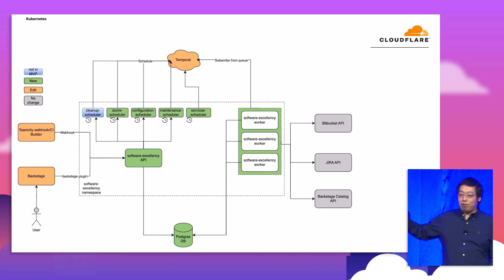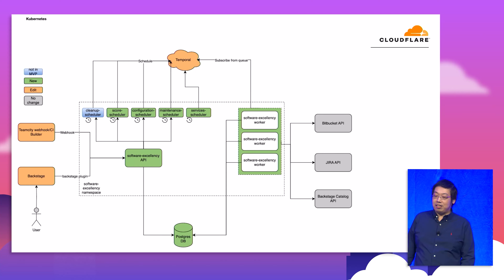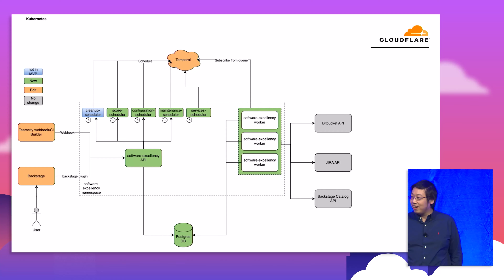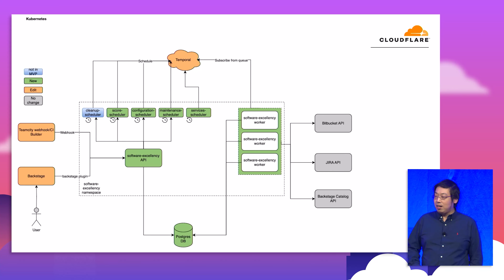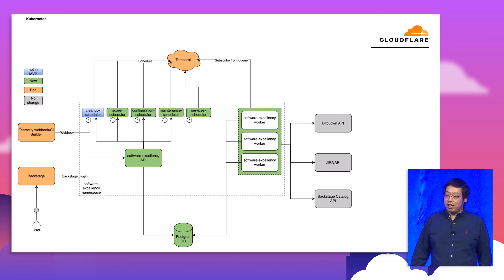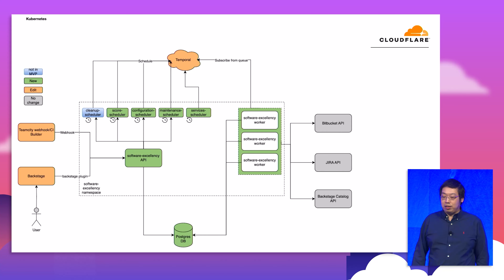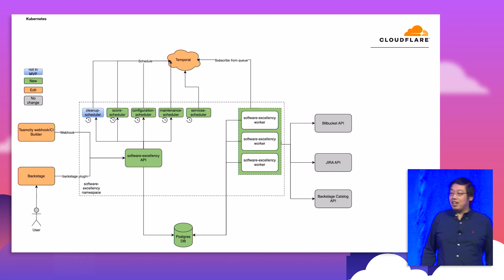On the right side, we have a list of Temporal workers deployed in Kubernetes. Those workers subscribe to events from the Temporal server — we are using the self-hosted version, which we started using around two years ago. The worker subscribes to events from the Temporal server, calls external dependencies, performs all the production readiness checks, and stores the results into a Postgres database. We also have the scheduler on the top, which schedules repositories into the Temporal server, and a Temporal API that reads information from the database and returns it to the user.